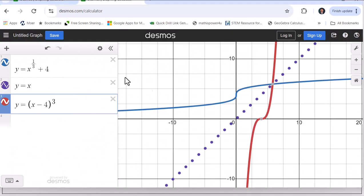In blue, we have the graph of the original function, y equals x to the power of one-third plus four. Notice how I use the rational exponent of one-third here instead of the cube root of x.